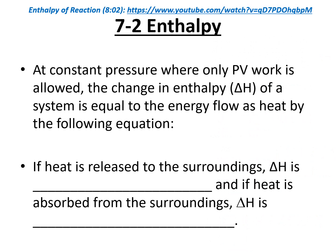Now we introduce the variable enthalpy. Enthalpy is interchangeable with Q, with the caveat that enthalpy applies at constant pressure. If heat is released to the surroundings, Q is negative, delta H is also negative — that's an exothermic reaction. If heat is absorbed from the surroundings, delta H is positive — that's an endothermic reaction.